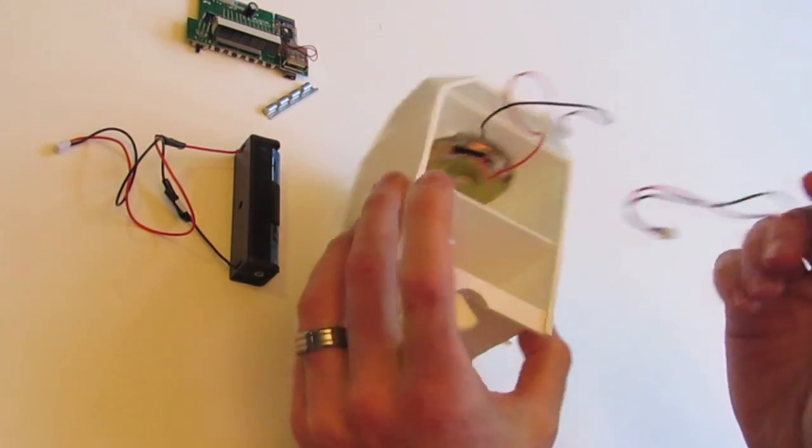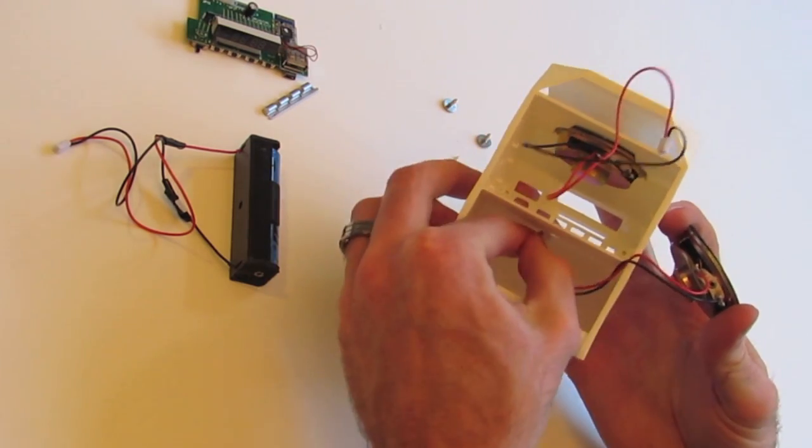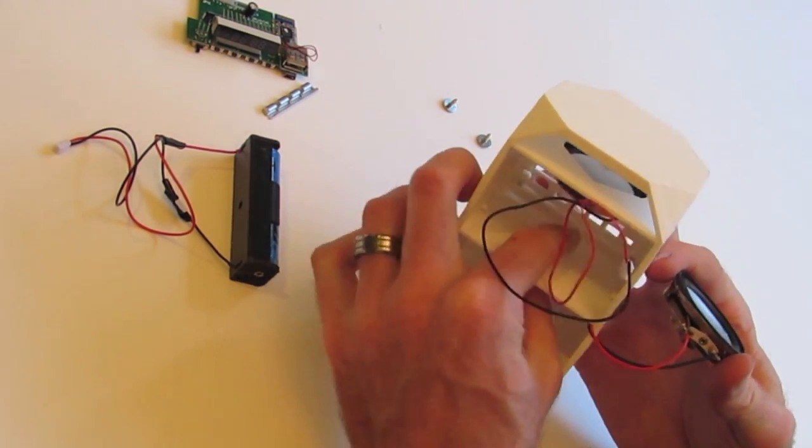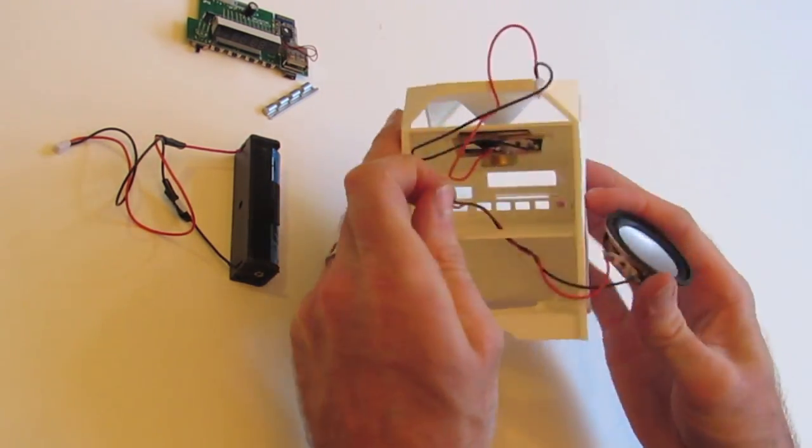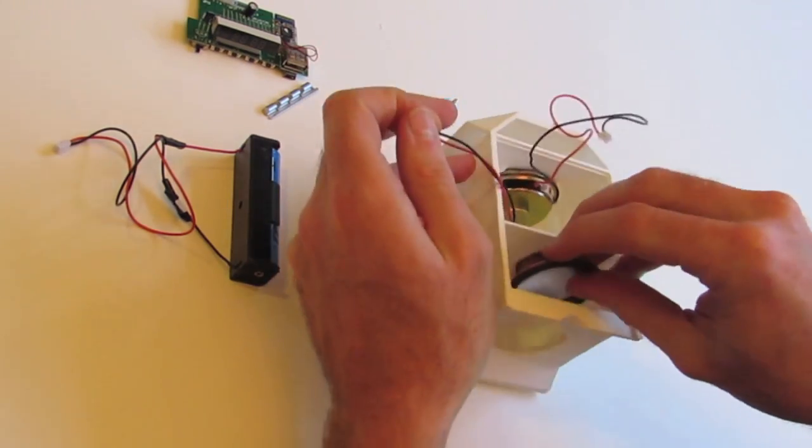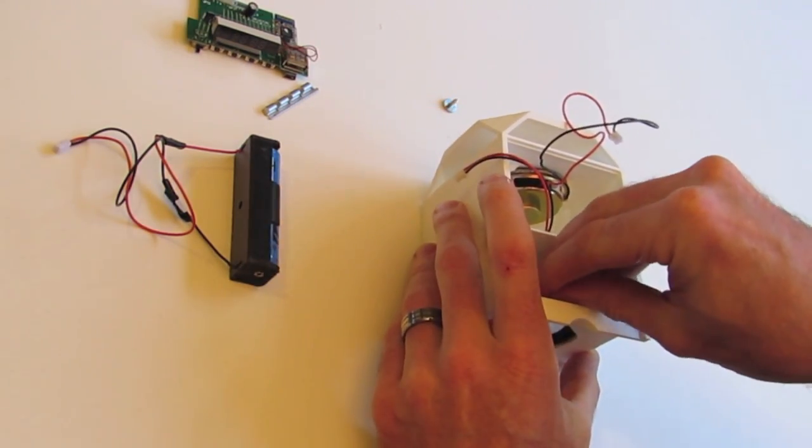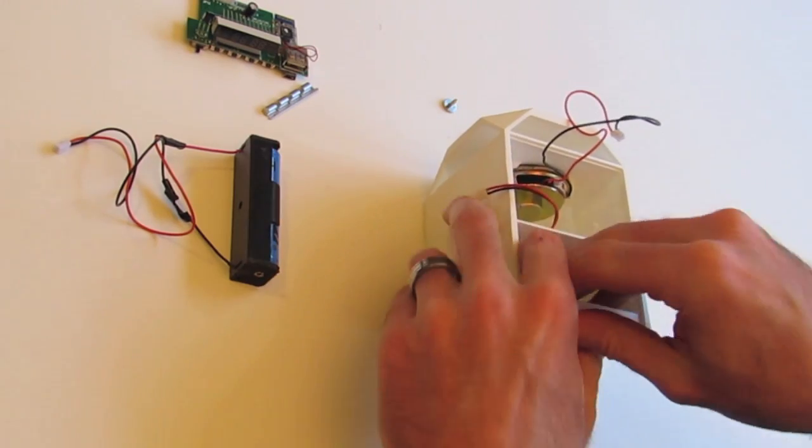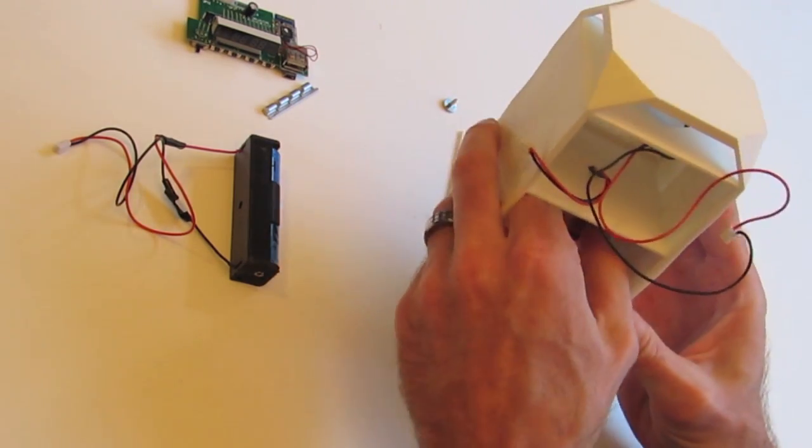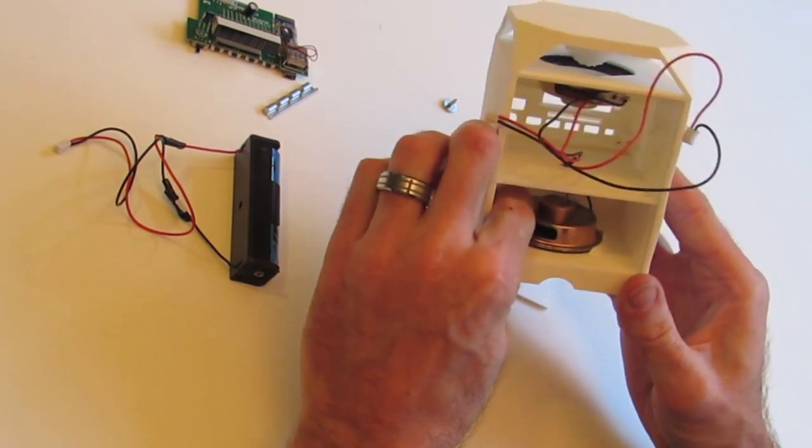And likewise, we're going to clip our bottom one in. Before you put the bottom one in, it's probably easier to feed this wire up through the hole here, like so. And then you can clip in that speaker as well.